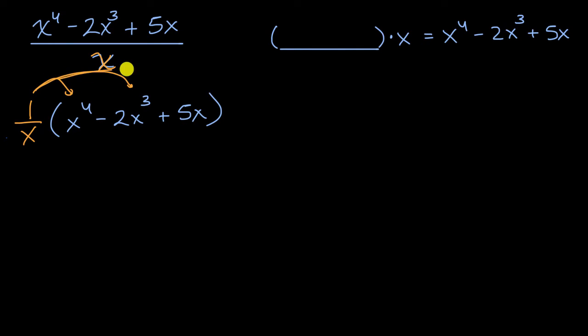And so what is that going to be equal to? Well it's going to be equal to x to the fourth over x minus two x to the third over x plus five x over x.